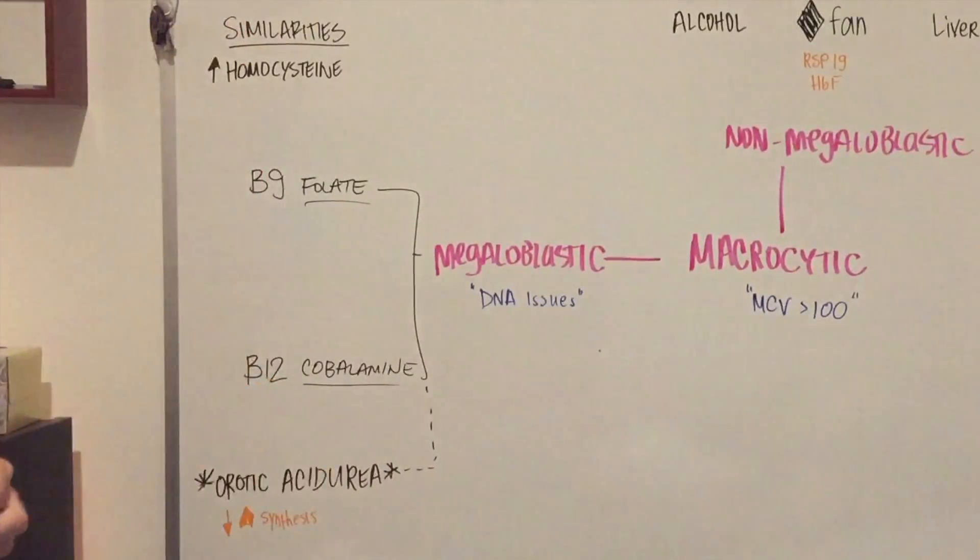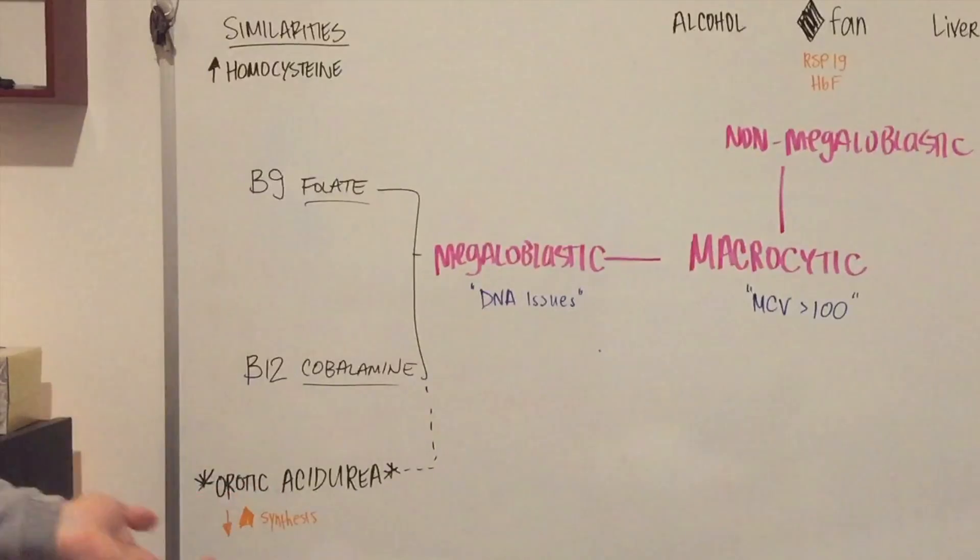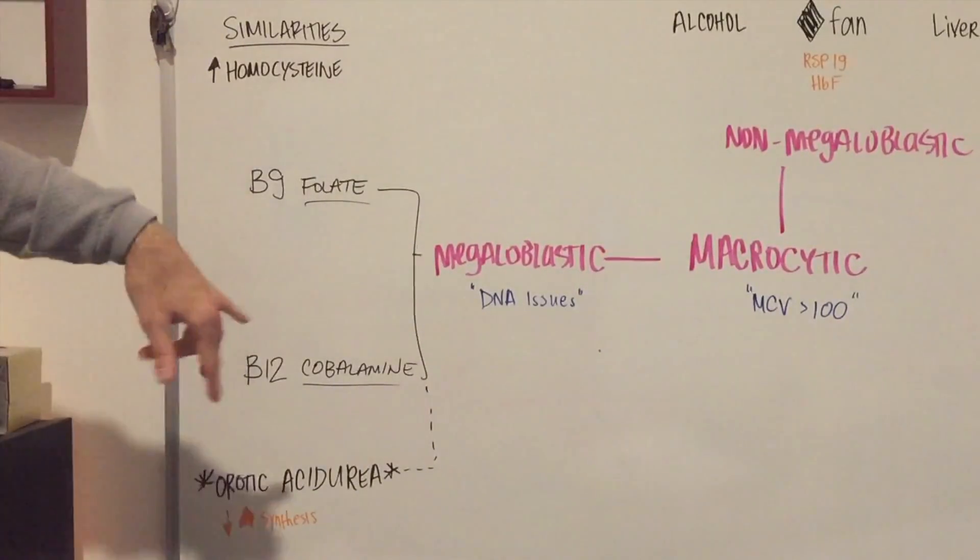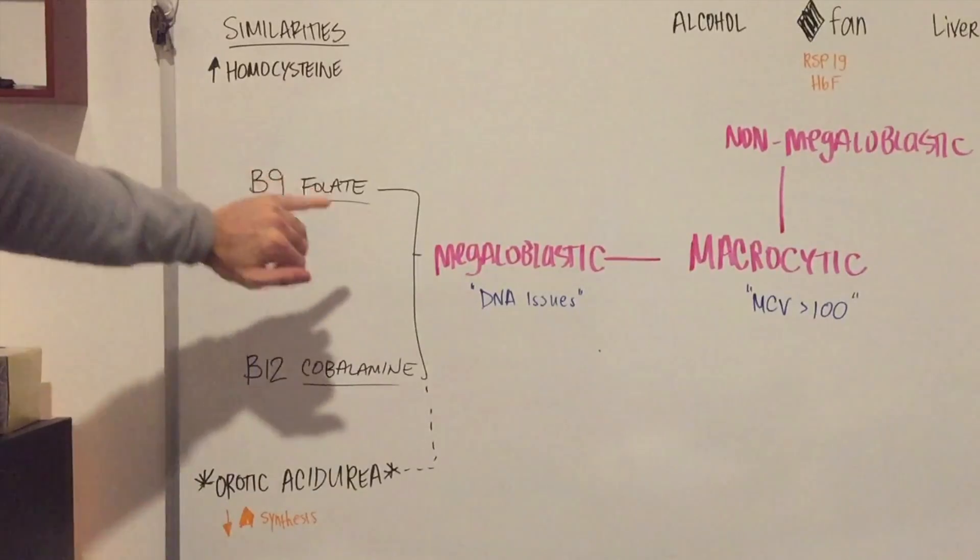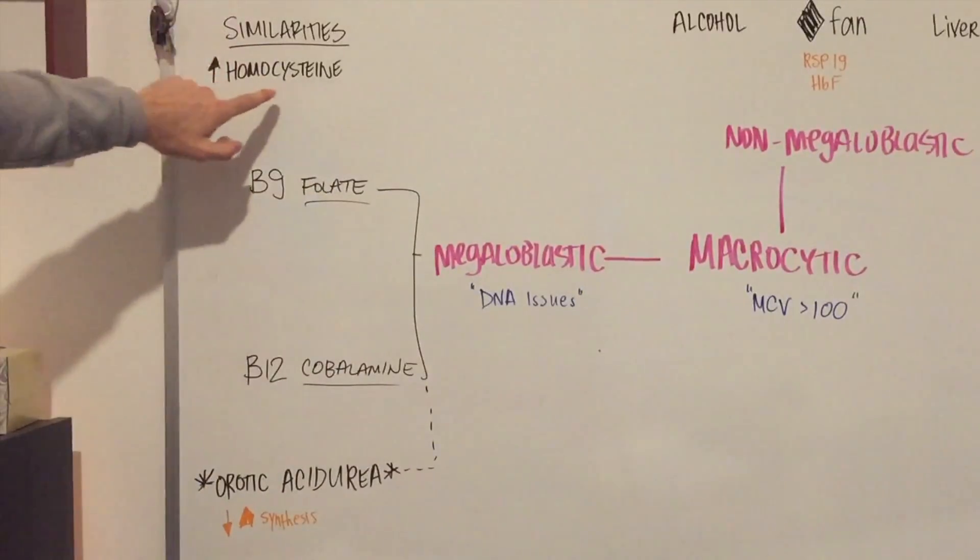And these vitamins are absorbed. This is in the jejunum and this is in the terminal ileum. And iron, once again, is absorbed in the duodenum. So when you have a deficiency in either folate or cobalamin, you are going to see that during presentation, there's going to be an increase in homocysteine levels.